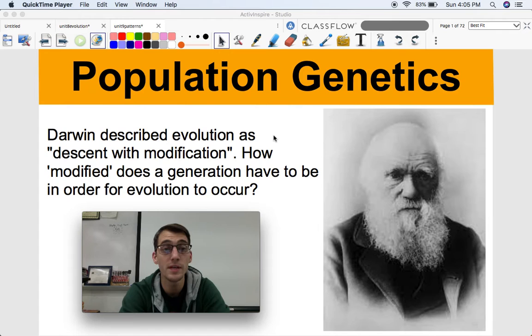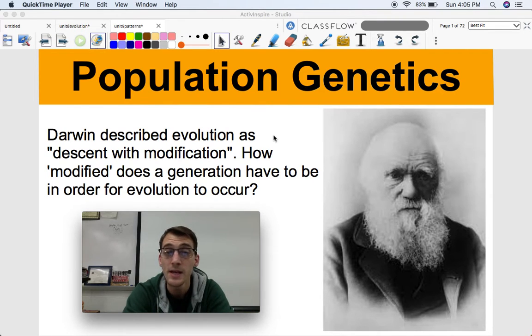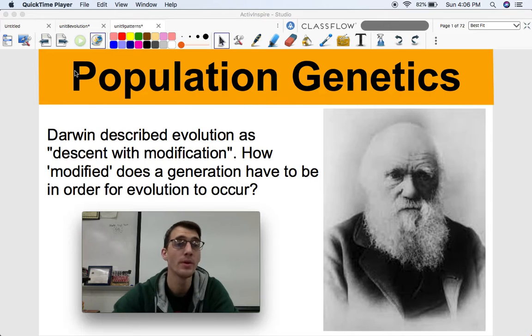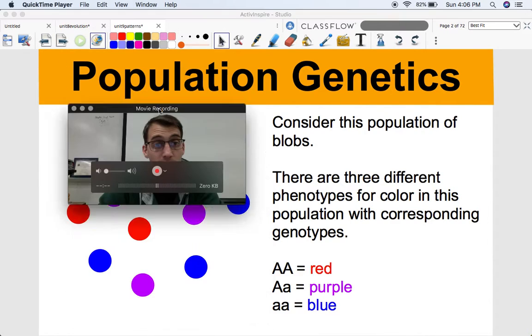So I'm going to start off this video, Population Genetics Part 1, by asking you this. Darwin described evolution as descent with modification. So how modified does a generation have to be in order for evolution to occur? When you think of the word evolution, you might think of the picture of the ape magically growing into a human, which I hate. But that's not necessarily the case. Evolution can be occurring even if there's a very slight modification in a population from one generation to the next. How do we determine whether or not a population is evolving?